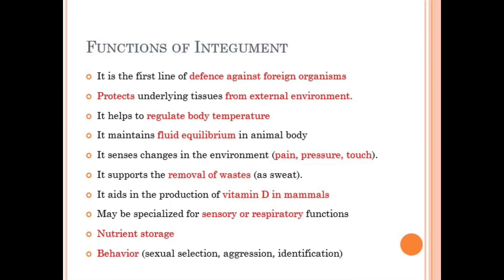One of the most important functions in mammals is vitamin D production — the skin acts as a natural factory for producing vitamin D. In some cases it can be specialized for sensory and respiratory functions, as in frogs and toads. The integument also provides nutrient storage, where connective tissue in the skin stores fatty acids used later for energy production. Finally, it plays a role in behavior, including sexual selection, aggregation, and identification.